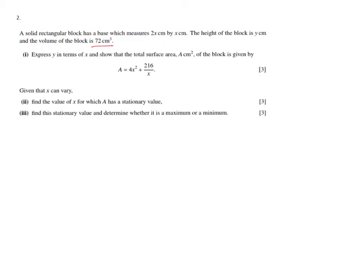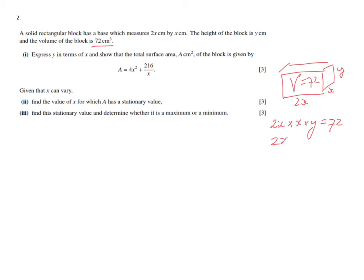It's always a very good idea to start with a sketch. So we have this rectangular block — let's make this cuboid. The base is 2x by x, and the height is y. The volume is 72. We find the volume of a cuboid by doing length times width times height, so that will be 2x times x times y, which equals 72. So 2x squared y equals 72 — that is the equation we have created.